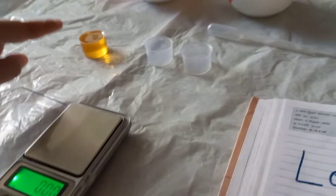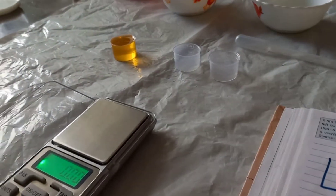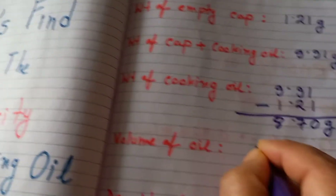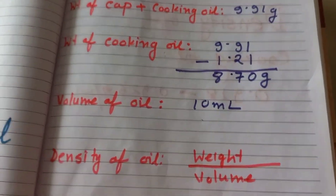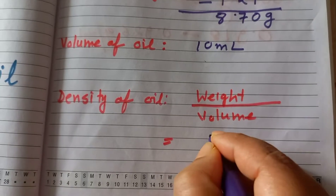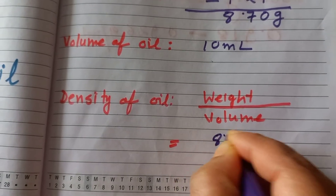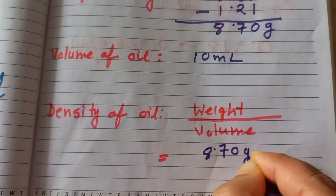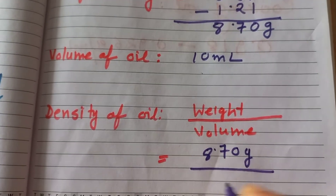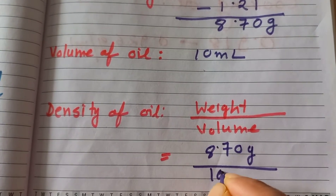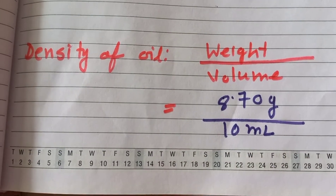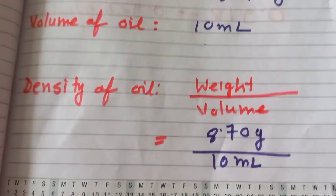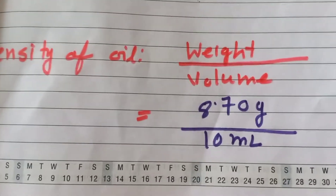The volume of oil is 10 ml — as I told you, the medicine cap is 10 ml. So the weight is 8.70 grams and the volume is 10 ml. From here I will find out the density.